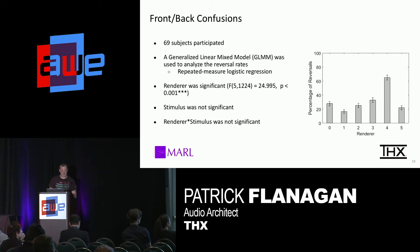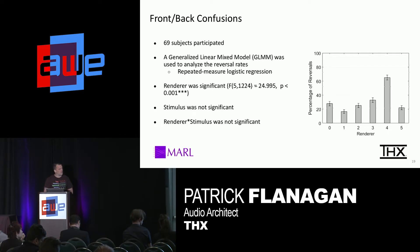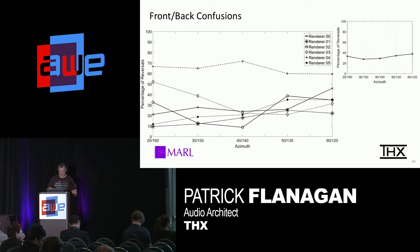Moving to front-back confusions: 69 participants. Using a different analytical method, we found renderer was significant for understanding front-back confusion, while stimulus was not, and renderer-times-stimulus was not. Notably, renderer four — a first-order ambisonics type renderer — performed extremely badly. Over 50% of the time, a stimulus presented in front appeared behind them. Renderer one performed very well. Looking at azimuth-dependent results, at 40 degrees and 140 degrees of azimuth you see a tight cluster of correct answers, while renderer four performs poorly across many different azimuth locations.